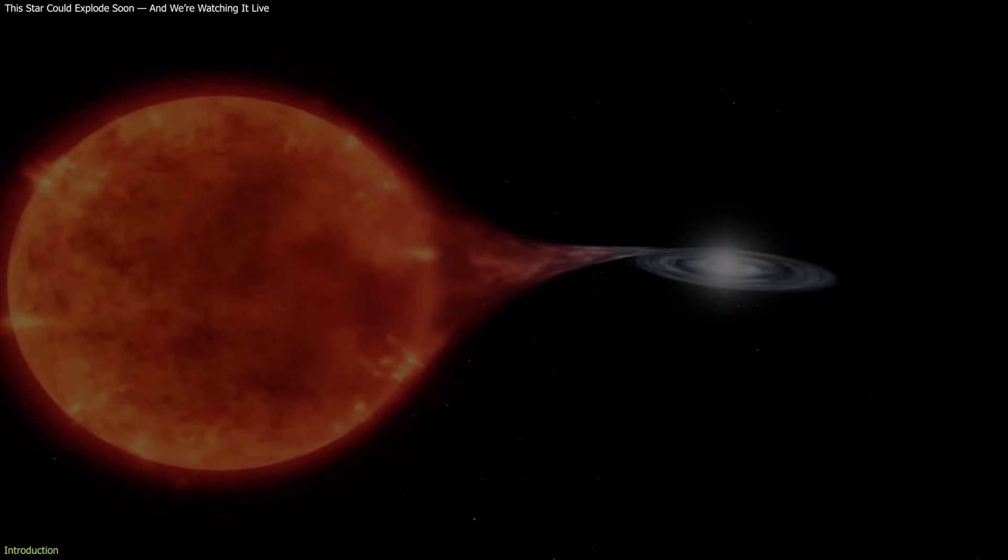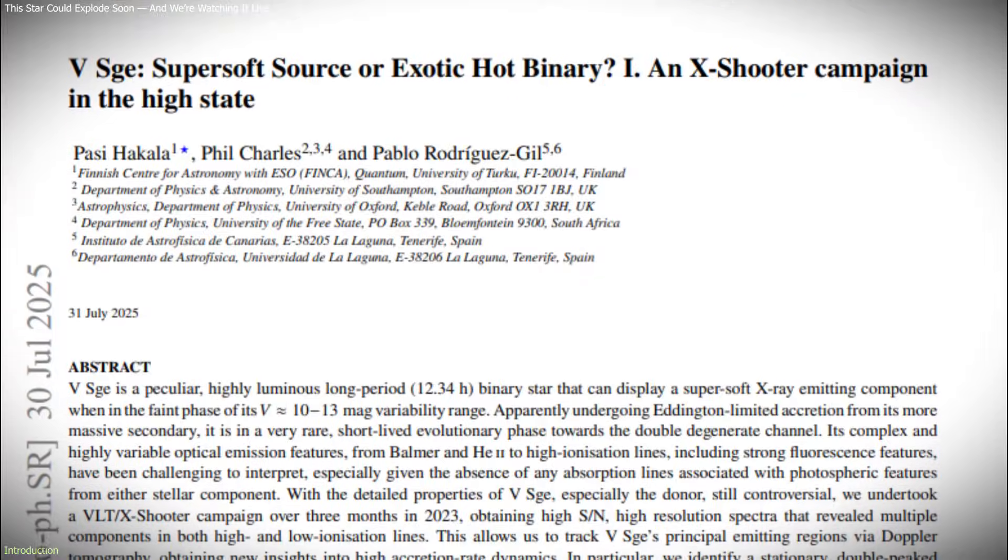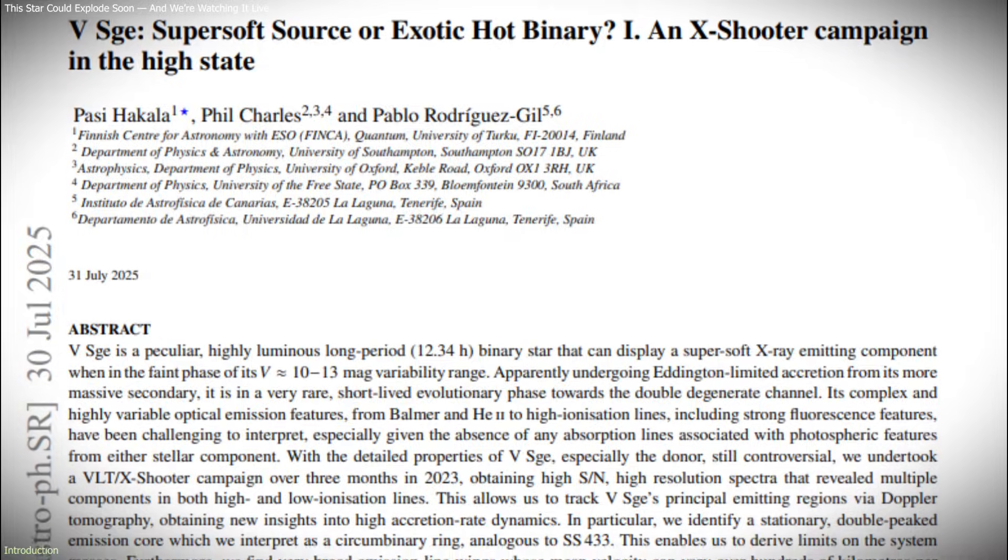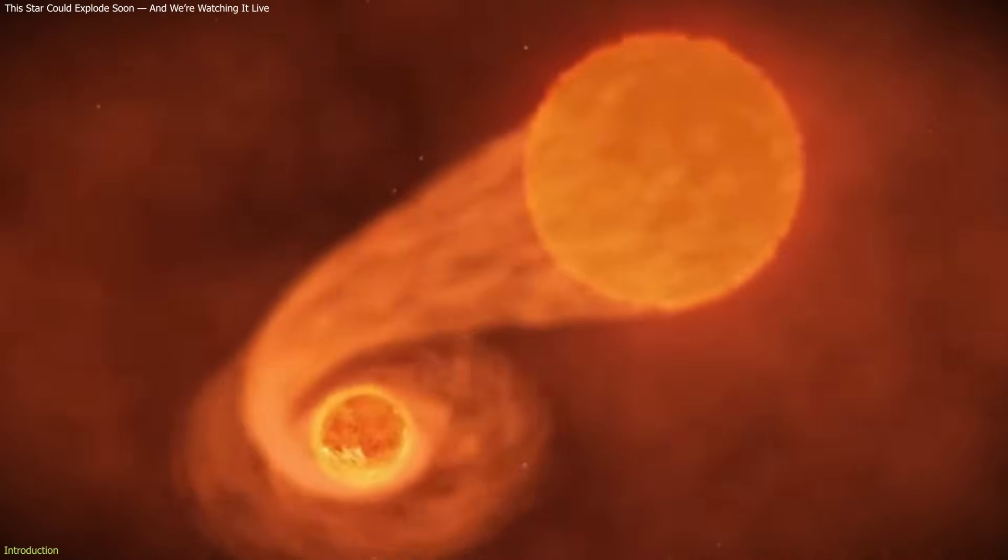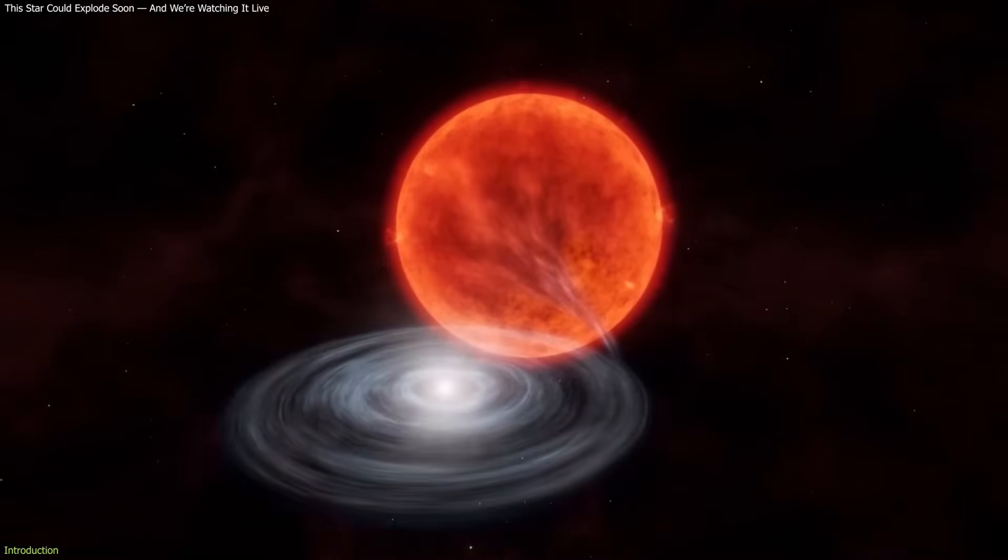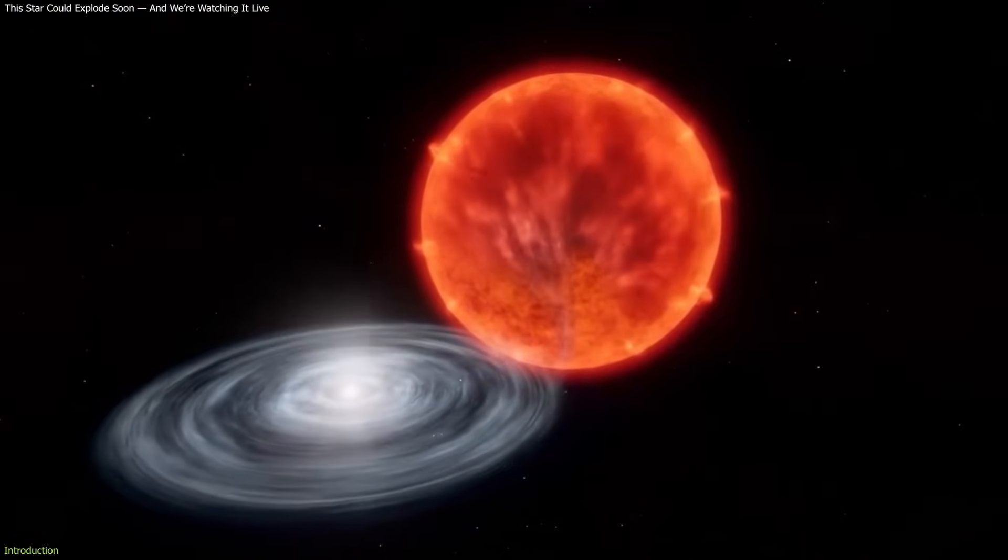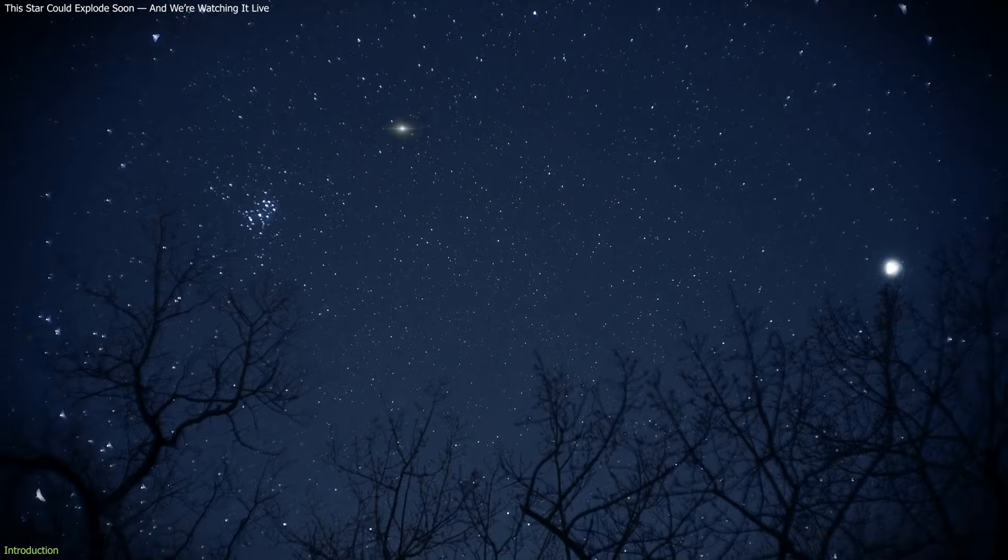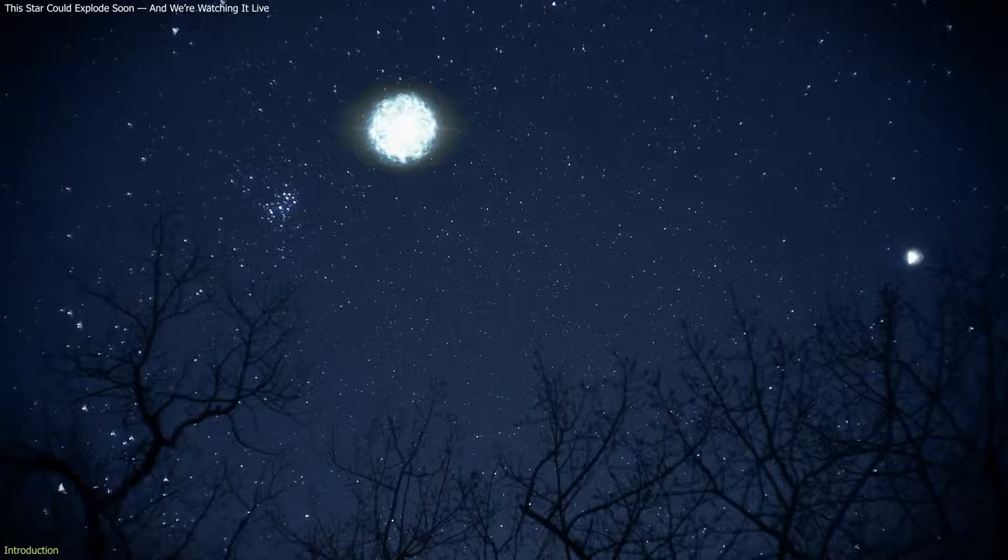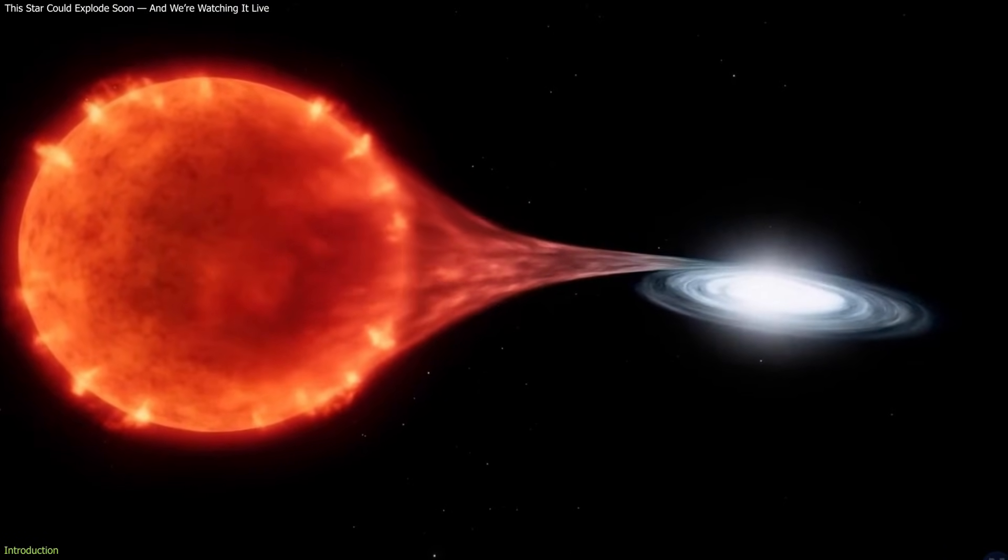Astronomers are closely monitoring a star system called V Segatai where recent observations suggest an explosive event may be approaching. This binary system, located about 10,000 light years away, is showing unusually intense activity as a white dwarf rapidly pulls material from its companion star. Researchers believe this unstable process could soon trigger a nova, potentially making the system visible from Earth. While the timing remains uncertain, the physics behind it is becoming clearer.